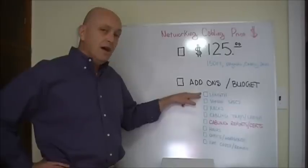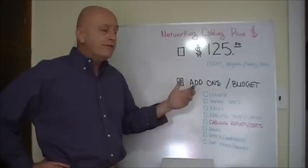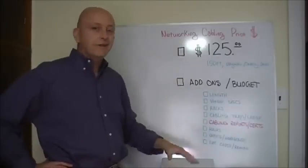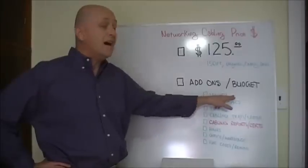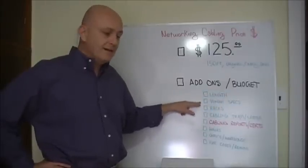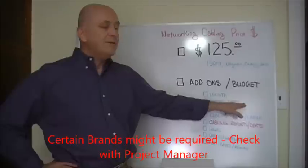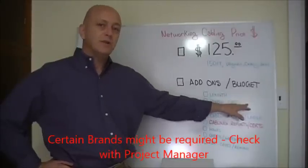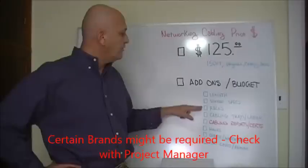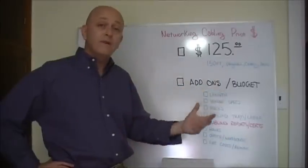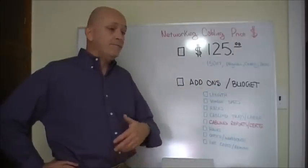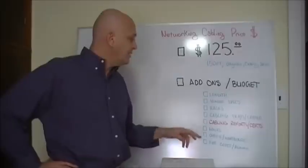We want to do length. What if it's 200 feet? What if you got to go over this, under this, all those particular things, conduit. Vendor specs. Jimmy John's was a great example. Had to be a certain kind of cabling. Had to be a certain kind of jacks. That was more money. Racks. Do you need any equipment? Do you need more space, patch panels or anything like that?